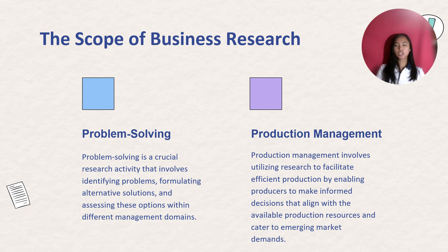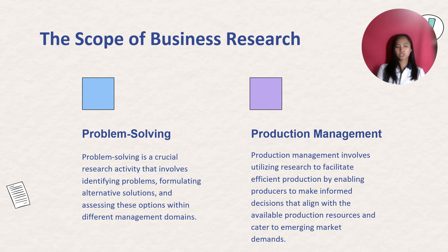Lastly, we have production management. Production management involves utilizing research to facilitate efficient production by enabling producers to make informed decisions that align with available production resources and cater to emerging market demands. The research effectively assesses the market opportunities and production resources.